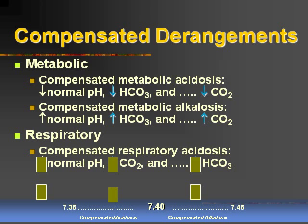Let's look at a compensated respiratory acidosis. Acidosis tells us that it's going to be a pH less than 7.4, and compensated tells us it's within the range of 7.35 to 7.39 — a low normal pH. Respiratory tells us to look at the CO2 number. To have a respiratory acidosis we need more CO2. And then the body compensates for that respiratory acidosis by holding on to base or bicarb, so we have an increase in our HCO3.